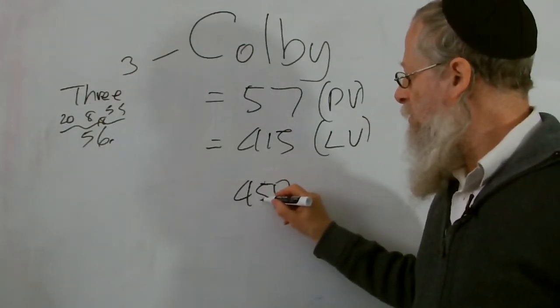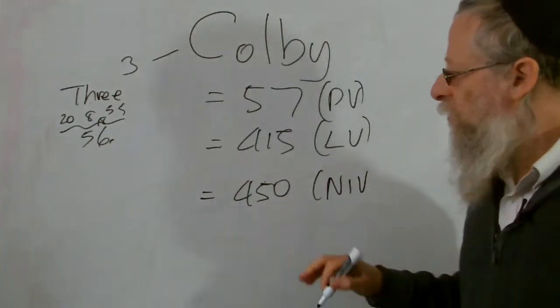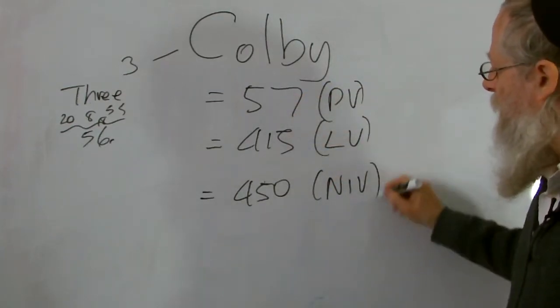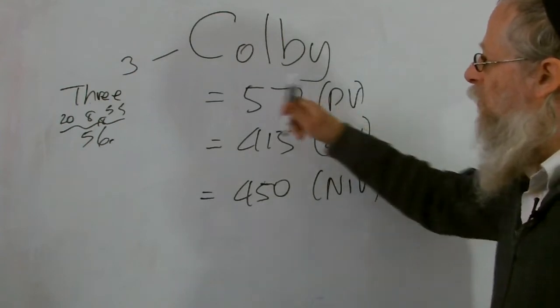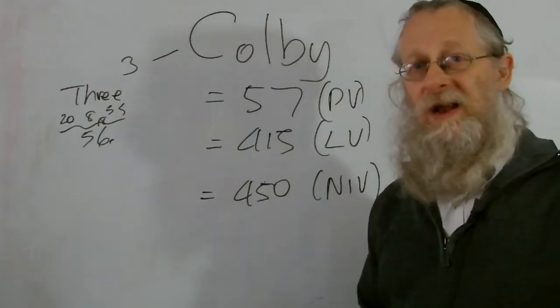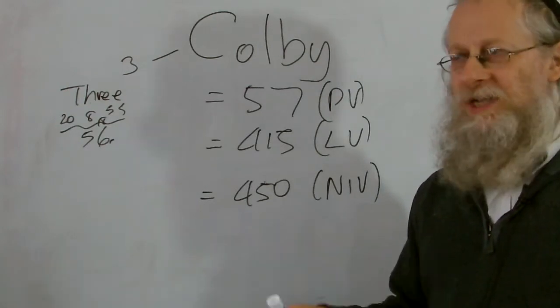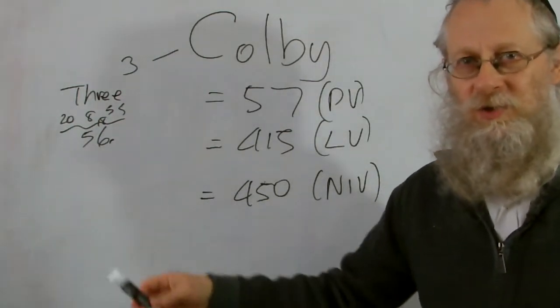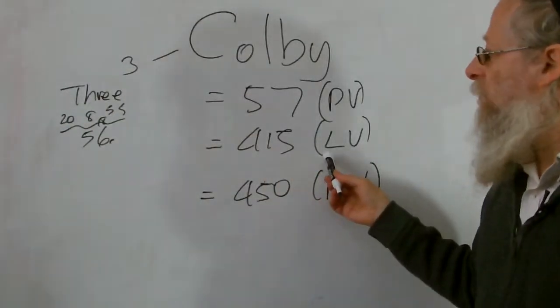And then I use the normal inner value. Again, I do encourage you to look at my lectures, my first seven or so lectures, and you'll get the idea what all these are. There are four systems that I use mainly, and this is three of them. The NV value I get, because there's a value which I'm not using, which is the normal value, where C is 3, O is 60, L is 30, where I take the decimal values. You go up to K is 10, J is 10, K is 20, so 1 to 10, 10 to 100, 100 onwards. So S is 100, T is 200.